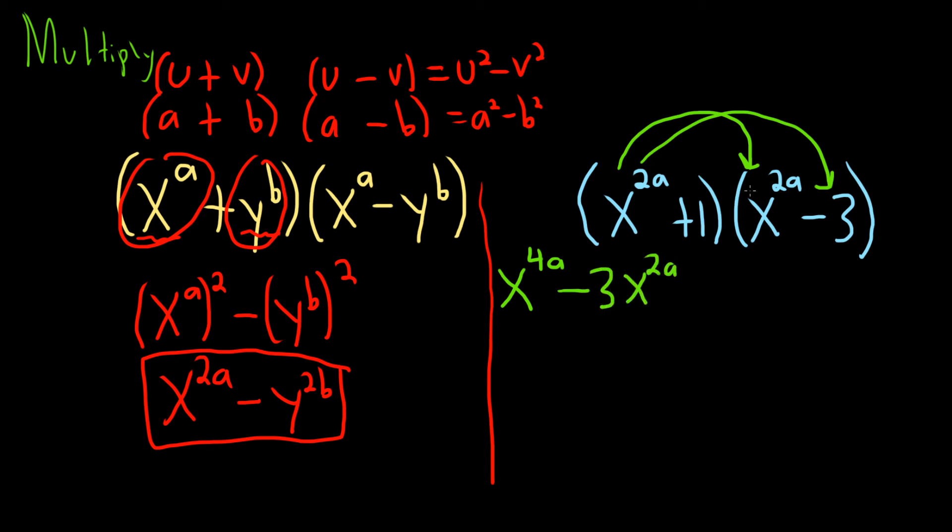Again, distributing, just taking this and multiplying it by each. Then you go to the next one. So 1, 1 times x to the 2a is x to the 2a. And 1 times negative 3 is negative 3.